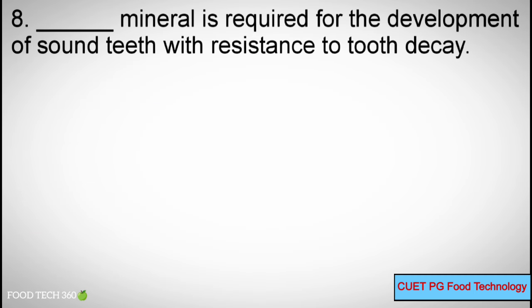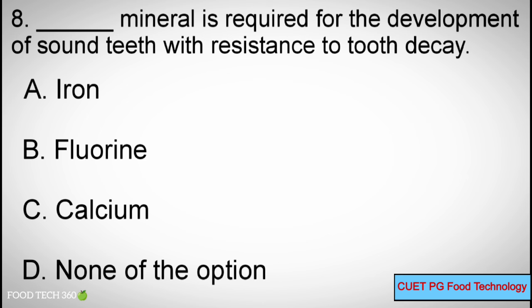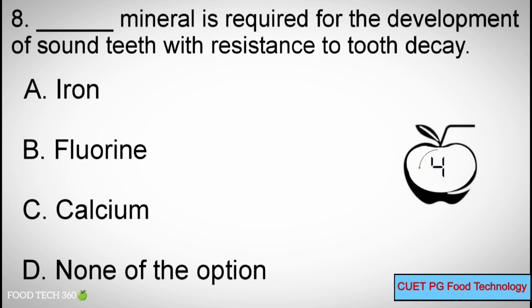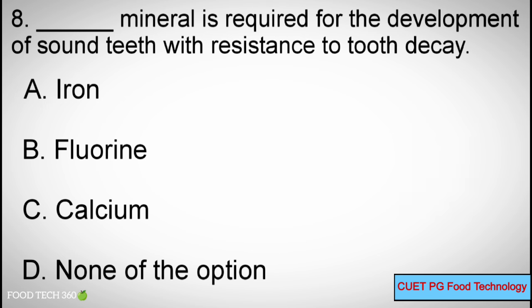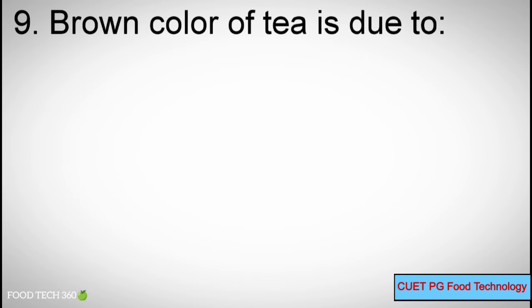Question number 8. Dash mineral is required for the development of strong teeth with resistance to tooth decay. Options: A. Iron, B. Fluorine, C. Calcium, D. None of the options. Correct answer: B. Fluorine.